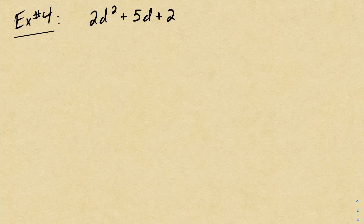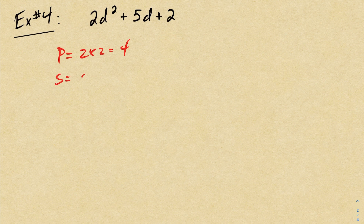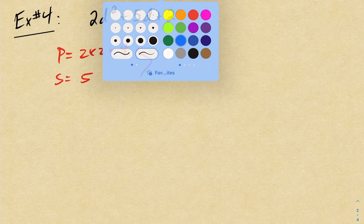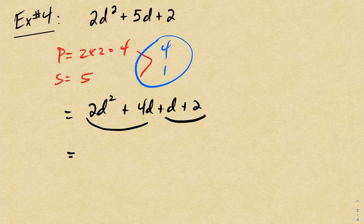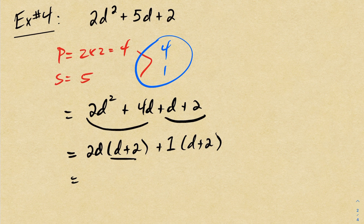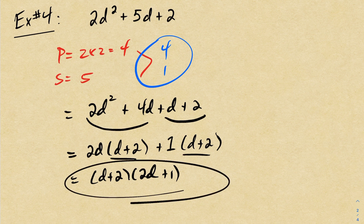In example 4, there's no GCF — this is a complex trinomial. My product is 2 times 2, which is 4. My sum is 5. Two numbers that multiply to be 4 and add to be 5 are 4 and 1. I replace the 5d with a 4d plus d and put the plus 2 down. Using factor by grouping, I factor out a 2d, leaving me with d plus 2. There's nothing to factor out of the last two terms, so I factor out a plus 1, leaving d plus 2. The common factor d plus 2 comes out, leaving 2d plus 1. Now we're fully factored.